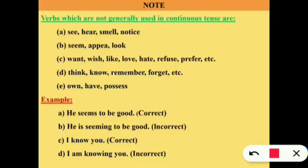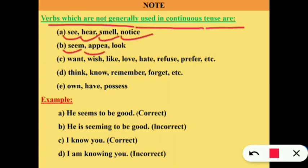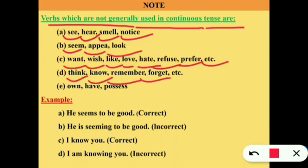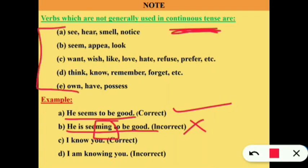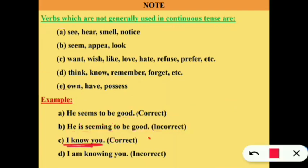Note: Some verbs are not generally used in continuous tenses. These include verbs of perception — see, hear, smell, notice, seem, appear, look; verbs of desire or feeling — want, wish, like, love, hate; verbs of thought — think, know, remember, forget; and verbs of possession — own, have, possess. Example: 'He seems to be good' is correct; 'He is seeming to be good' is incorrect. Similarly, 'I know you' is correct; 'I am knowing you' is incorrect.